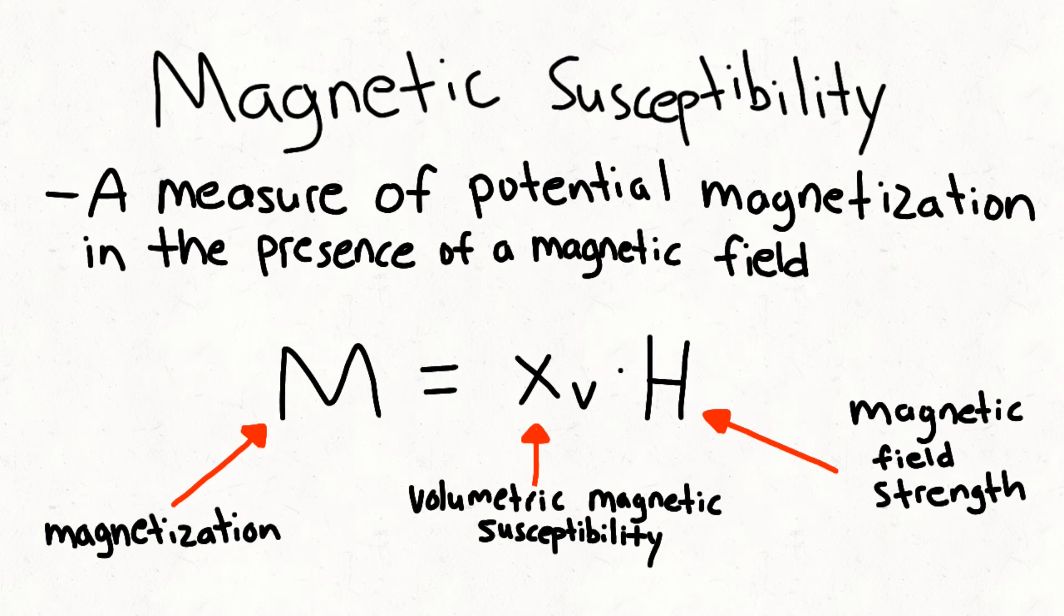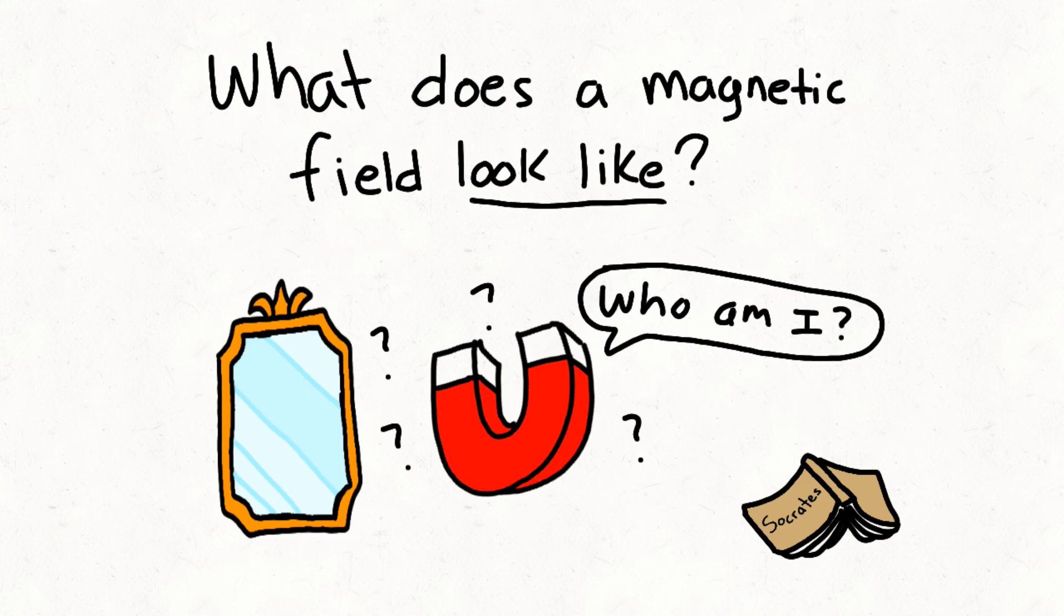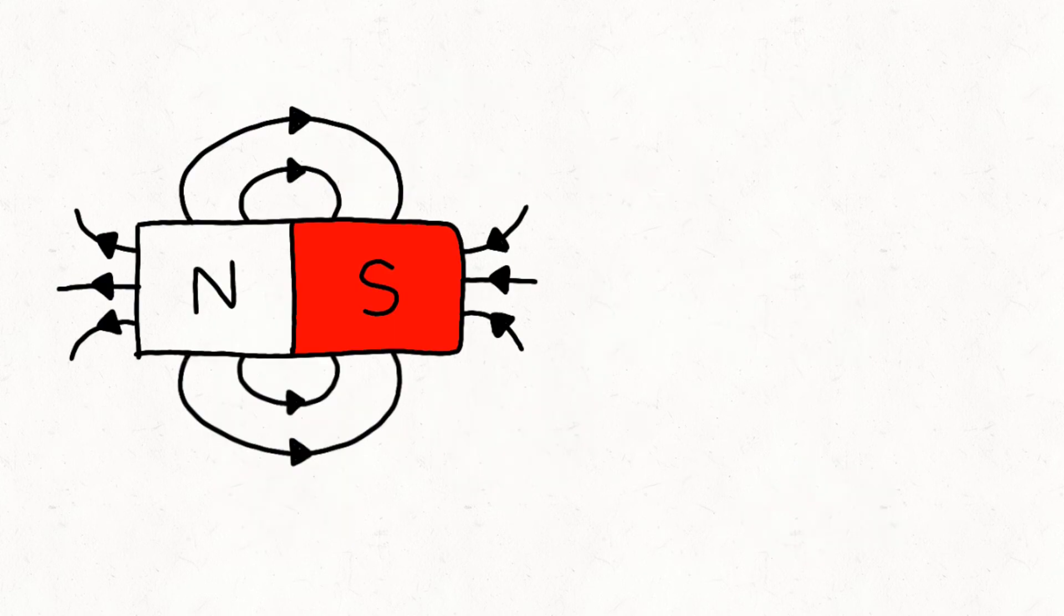So, what does a magnetic field look like? Let's assume we have a permanent magnet generating its own magnetic field. The permanent magnet is separated by a magnetic north pole and a magnetic south pole. This is known as a magnetic dipole.